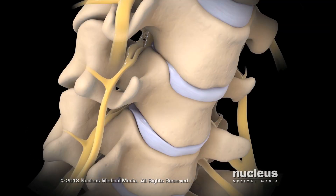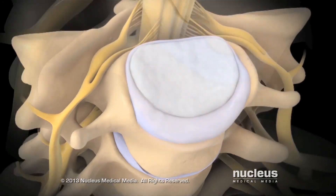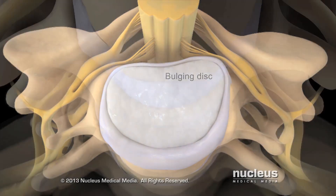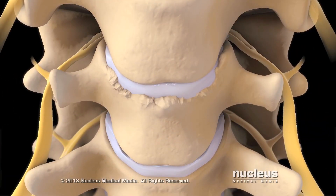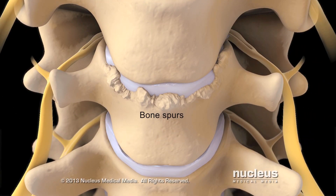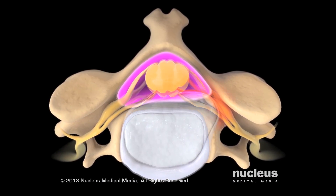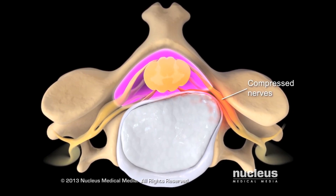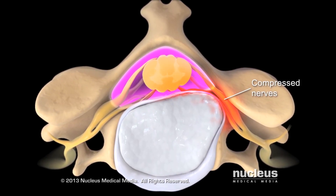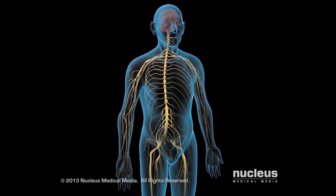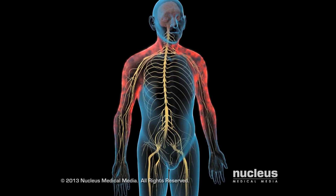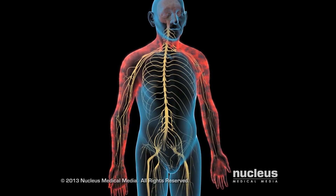Over time, your cervical spine may develop problems, such as a bulging disc, or bony growths on your vertebrae called bone spurs. These changes can narrow your vertebral canal and put pressure on your spinal cord or the nerves that branch off of it. The pressure can cause neck pain and stiffness, or pain, numbness and weakness in your arms or hands.